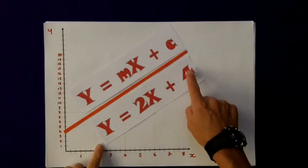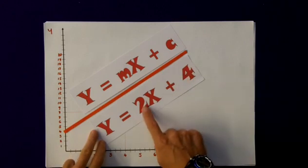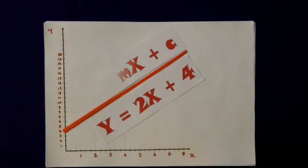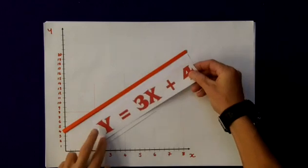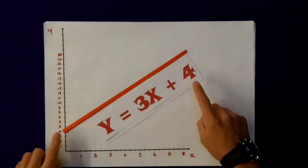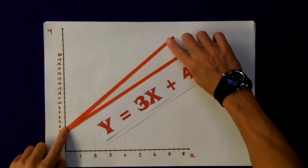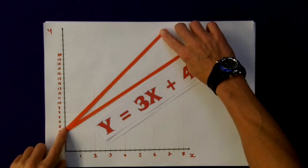What happens then if we keep our c value as in the original equation, but we change our m value? What happens if we change our equation slightly to y equals 3x plus 4? Well, the plus 4 will mean that the intercept point is still at plus 4, but the increase in the m value will mean that the gradient is slightly steeper.